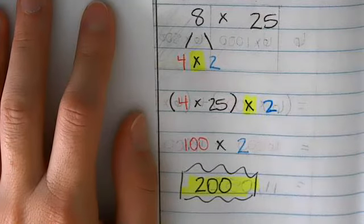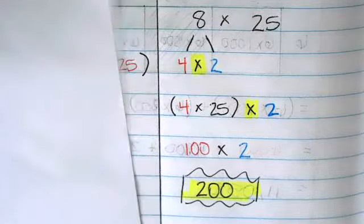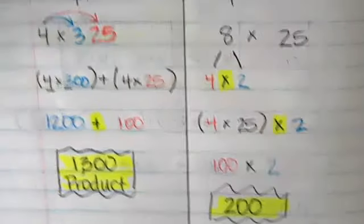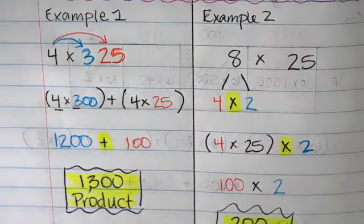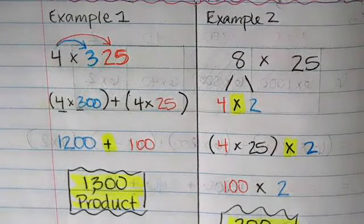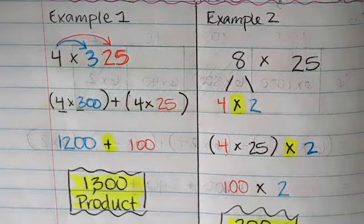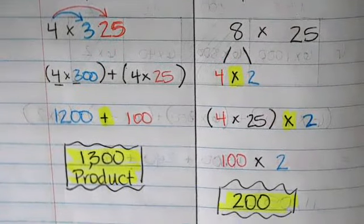So when you guys are working on multiplying larger numbers, why don't you try breaking that up? If you see a 25 in there, use that as your friendly number to help you solve your problems mentally in easier ways. Good luck to you.